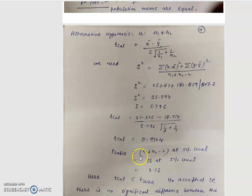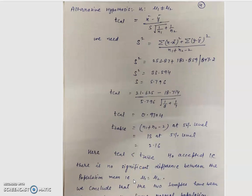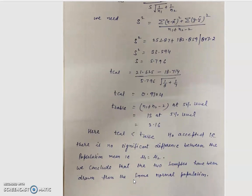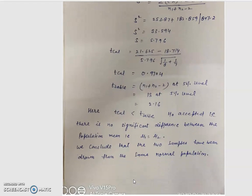The T table value at degrees of freedom n1 plus n2 minus 2 equals 13 at the 5% significance level is 2.16. Since T calculated 0.9704 is less than T table value 2.16, H₀ is accepted — there is no significant difference between the population mean and sampling mean. We therefore conclude that the two samples have been drawn from the same normal population.